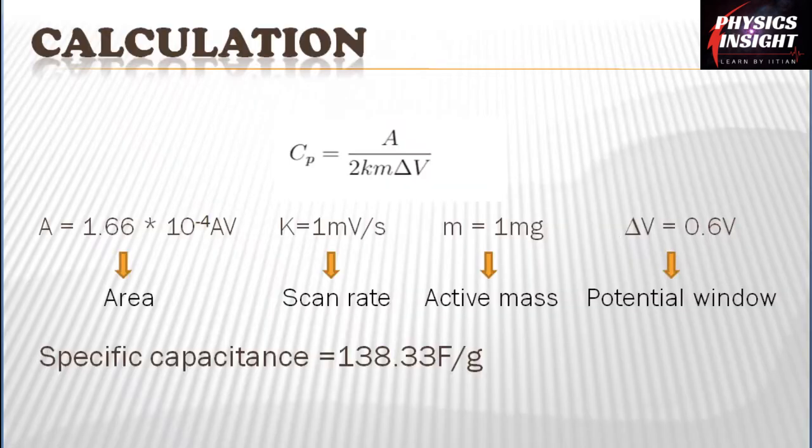Now proceeding further, we know every value in the expression: A (area) = 1.66 × 10^-4 that we get from the plot; K, the scan rate value that we set in the setup while taking the data, is equal to 1 millivolt per second; m is the active mass, the mass which is dipped into the solution while performing the experiment.